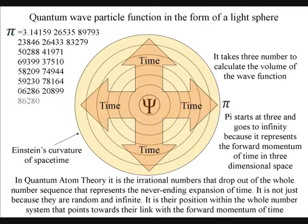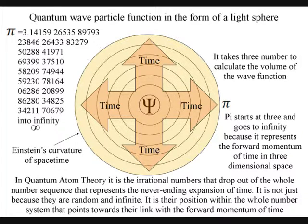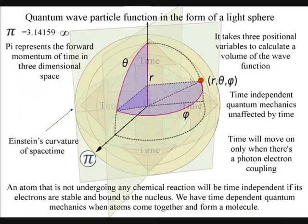The wave function expands as a volume of space in the form of a light sphere. It takes three numbers to calculate a volume of space, and the decimal expansion of pi starts at the number three.